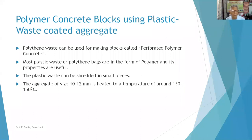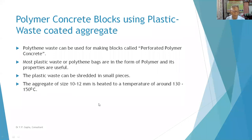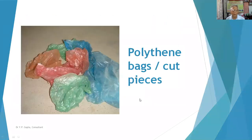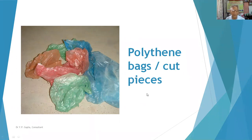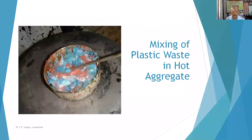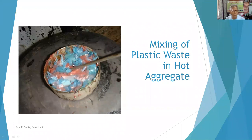Most plastic waste or polythene bags are in the form of polymer and some properties are useful. The plastic waste can be shredded into small pieces — aggregate of similar size, then be heated to a temperature around 130 to 150 degrees centigrade. This is the typical plastic waste collected from the street side, cleaned, and cut into pieces. After cutting, the plastic waste pieces are heated to 140 to 150 degrees and mixed with aggregate thoroughly.